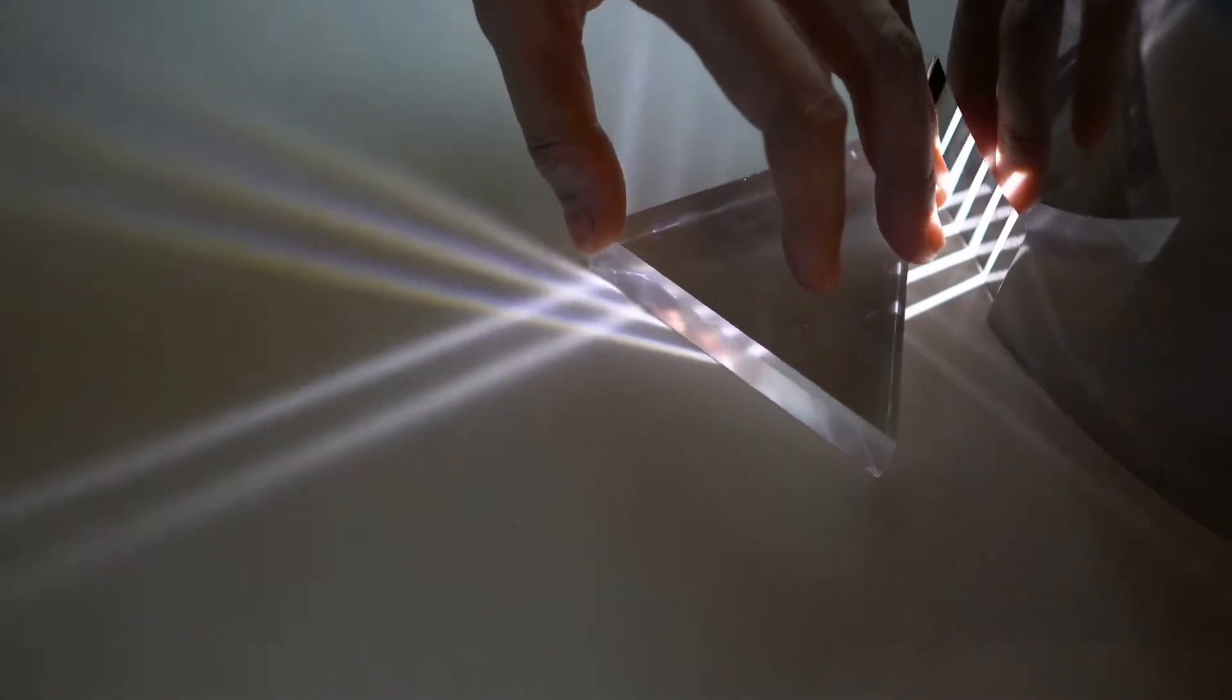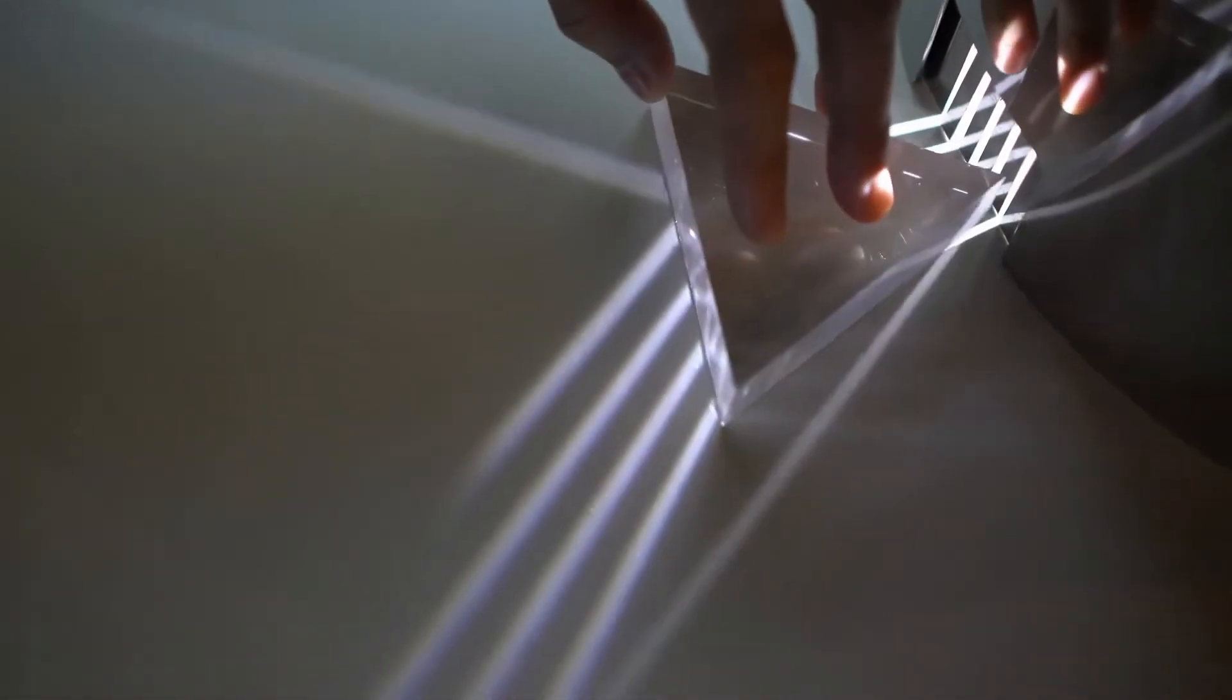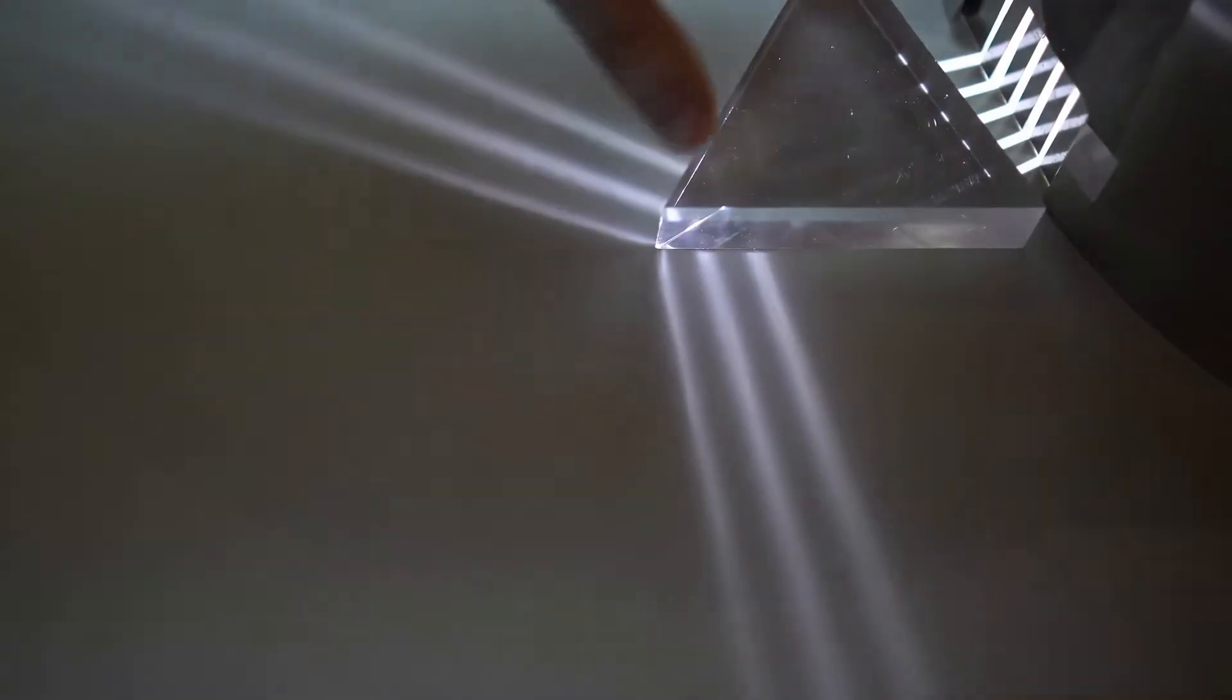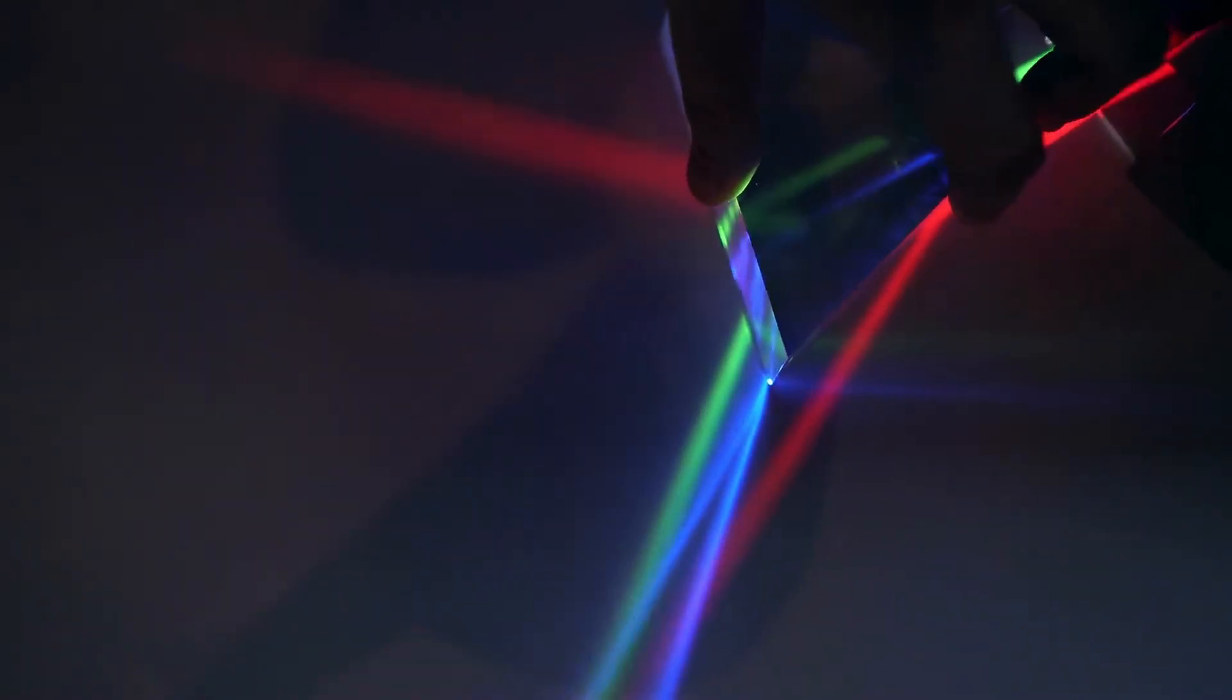Light behaves in different ways when it interacts with different objects. When light moves through transparent objects like a lens, it bends or reflects in different ways.